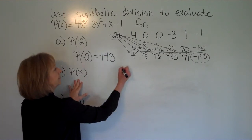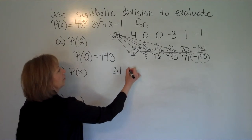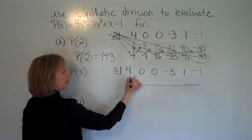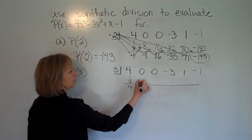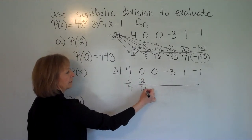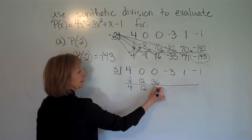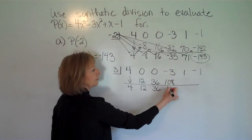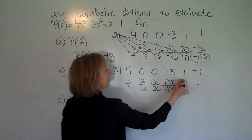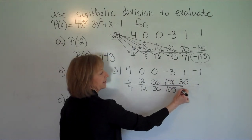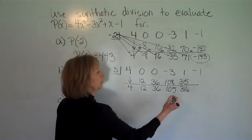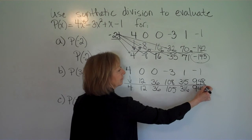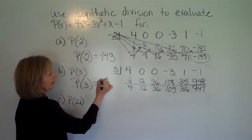Now let's go to P of 3. I'm going to put 3 in the half box, put my coefficients of the polynomial, drop down a line, draw my horizontal bar, and bring the first number down. Then: 4 times 3 is 12, 0 plus 12 is 12. 3 times 12 is 36, 0 plus 36 is 36. 3 times 36 is 108, negative 3 plus 108 is 105. 3 times 105 is 315, 1 plus 315 is 316. 3 times 316 is 948, negative 1 plus 948 is 947. So P of 3 is 947.